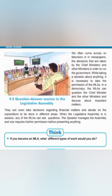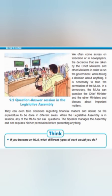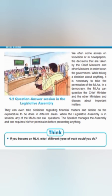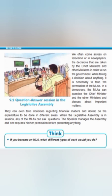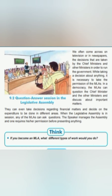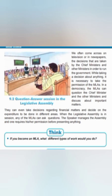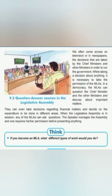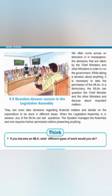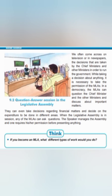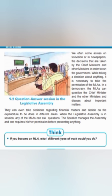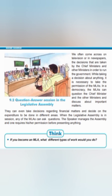Think box: If you become an MLA, what different types of work would you do? If I become an MLA, I would do the following jobs in my constituency: I will raise the facility of drinking water and make provisions for draining out dirty water. I will raise electricity facilities in every village and have paved roads constructed. I will raise facilities for primary education and public health in every village. I will ensure every village has elected panchayats, a good gram panchayat house, and ponds dug deep enough to retain water throughout the year.